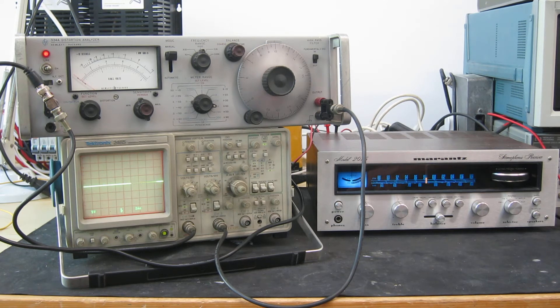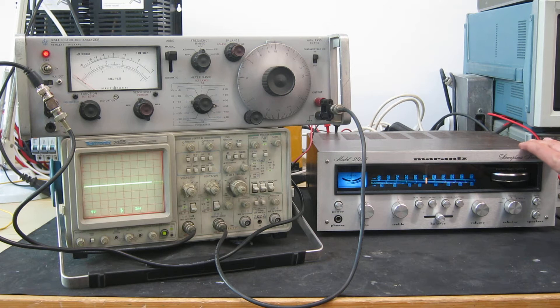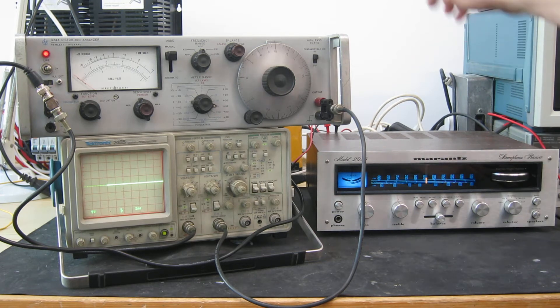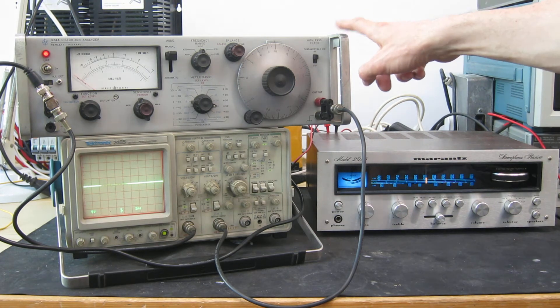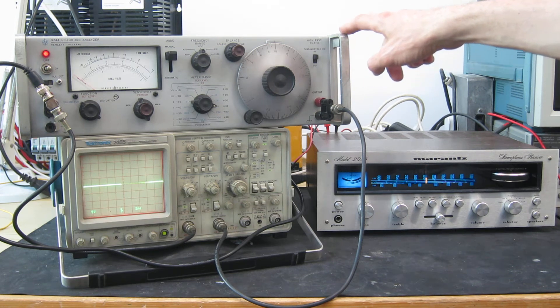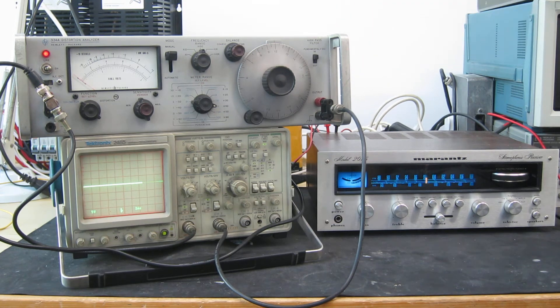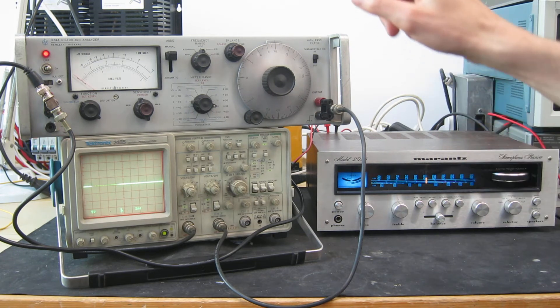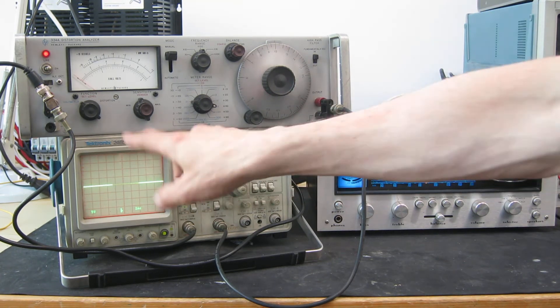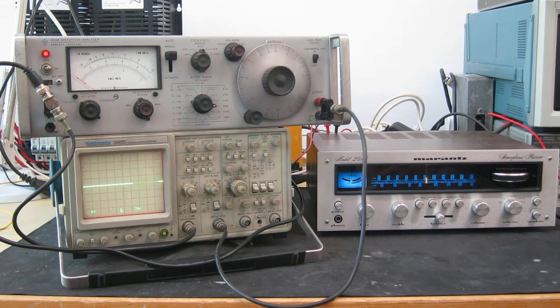I'll just explain the setup here. Here's the receiver that's under test. Over here I've got the Hewlett Packard 334A distortion analyzer. It's not exactly the newest model but it gives good results down to about 0.1% or less. As a scope here for detecting clipping, looking at the output, and also so we can see the residual from the distortion analyzer.